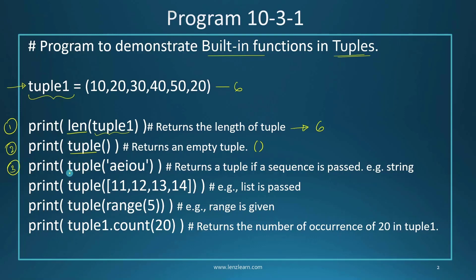In the third print statement, we call the same built-in function tuple() but this time I give a string as the argument. The tuple() function will create a tuple with each character in the string as a separate element, so the first element will be 'a', the second 'e', the third 'i', and so on.